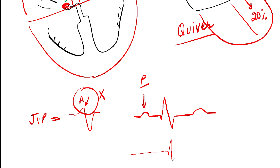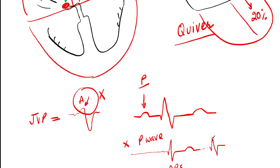The QRS complex will be normal — narrow — because there is no problem with the ventricle. T waves are present. P waves are absent, just quivering or flat baseline. There are no PR segments. This is your basic EKG identifier for atrial fibrillation: absent P waves with normal narrow QRS complexes in an irregular rhythm.